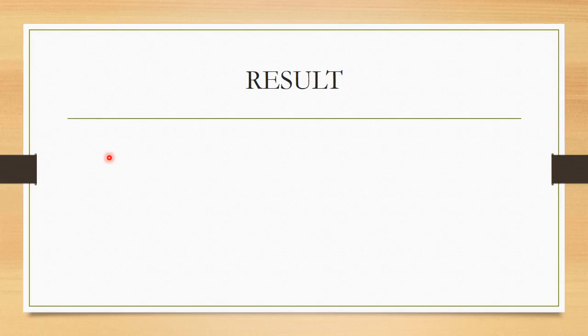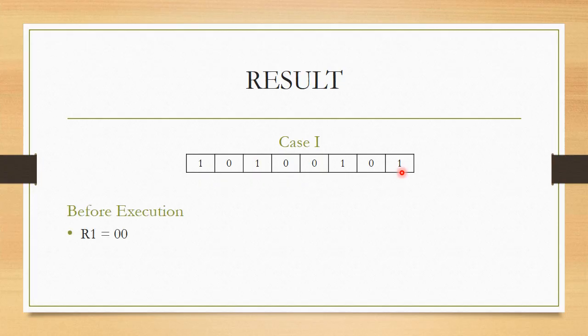Let us try to understand two different cases of the result. Case 1: I am putting in the number which we considered. It was A5H, that is nothing but 1010 0101. Before execution I had only reset the value of R1 to 0.